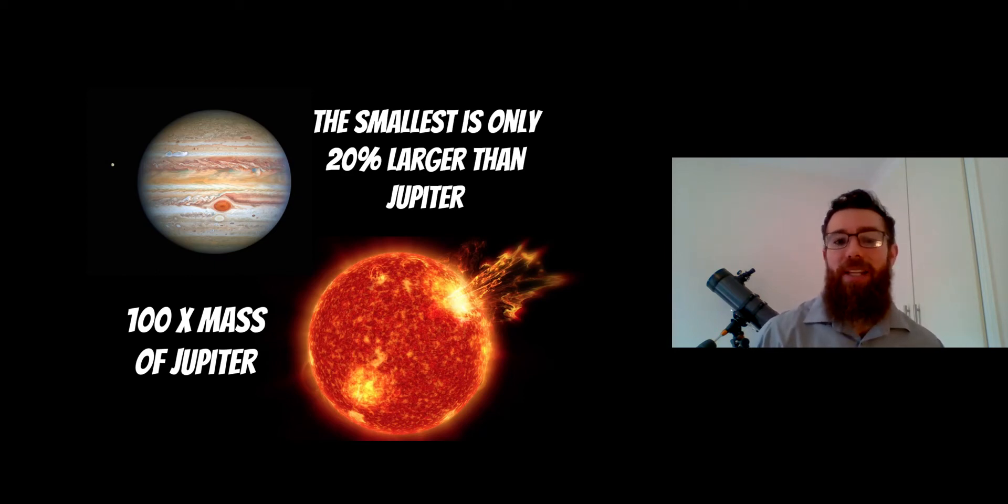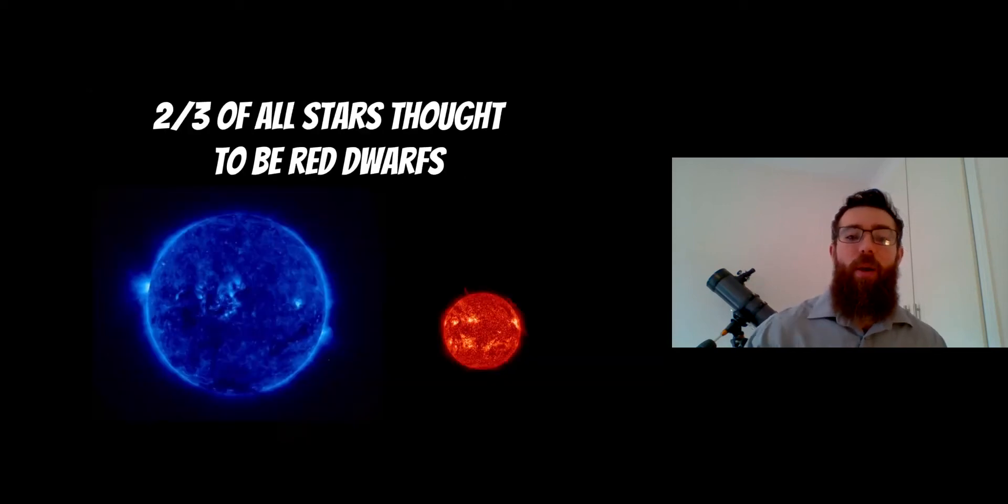The planets just don't have the mass there to get the temperatures up in the core whereas these low mass stars are just at that limit really. Now about two-thirds of all stars are thought to be red dwarfs in the universe. So the vast majority of all stars are going to be red dwarfs. Very small percentages of them are actually the larger stars like the big blue stars. There's not that many of them about. The vast majority of stars are red dwarf stars.